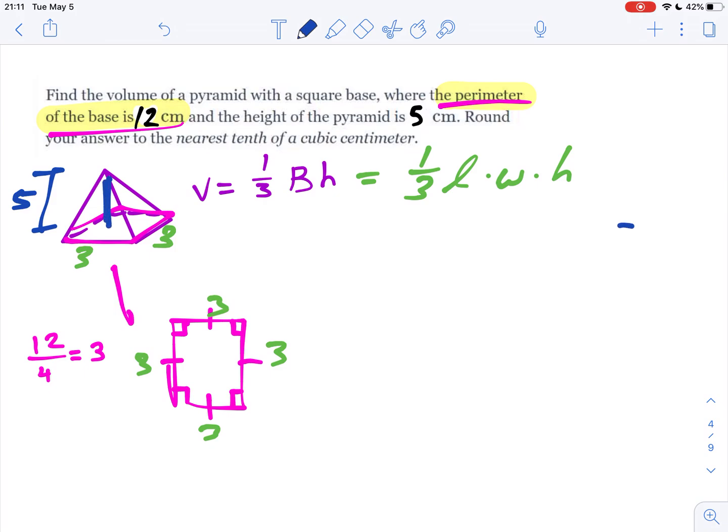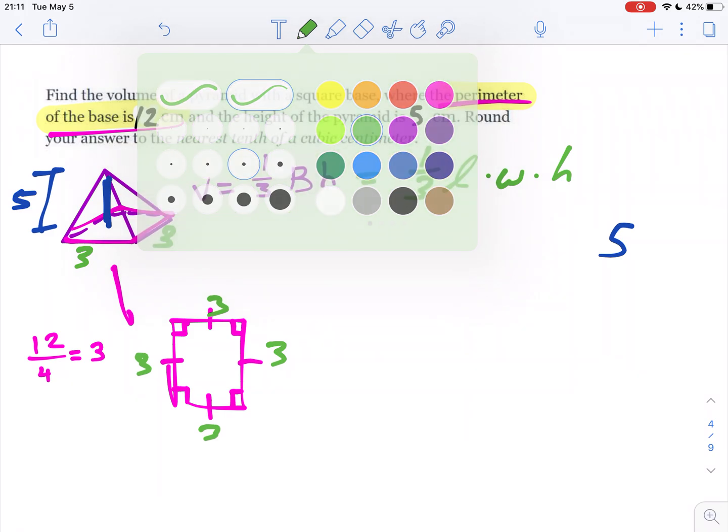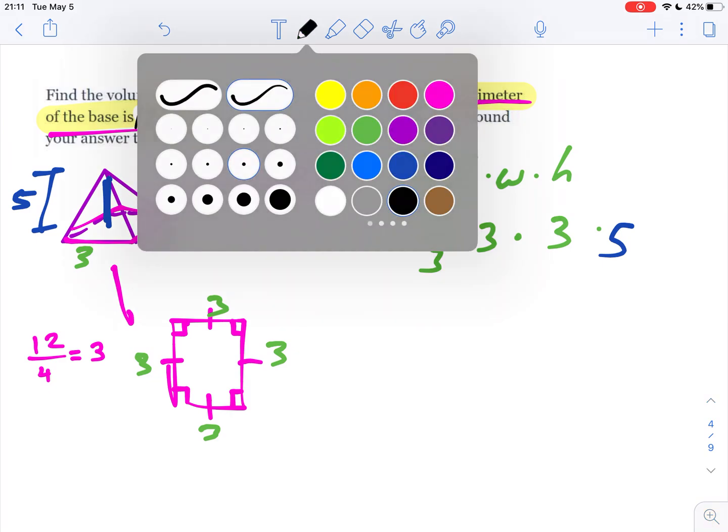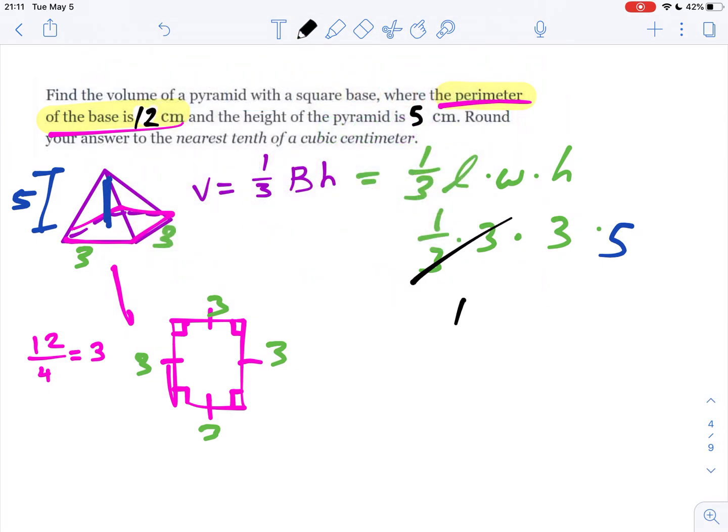So plugging those in, the height is 5. The formula says one-third times the length, which is 3, times the width, which is 3. Length times width times height will give us the answer. This time we don't need a calculator because one-third of 3 is 1, and 1 times 3 times 5 is 15 cubic meters.